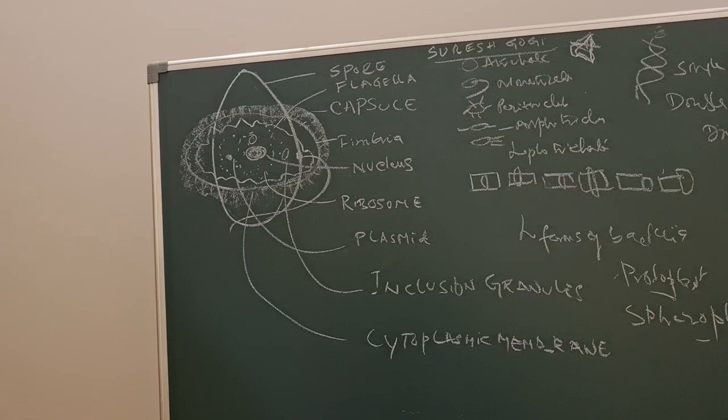Inclusion bodies are seen in Corynebacterium diphtheriae, which are polymerized metaphosphate. They are polar, called Babes-Ernst granules. This is morphology of bacteria. Please remember important points while going to your examination.